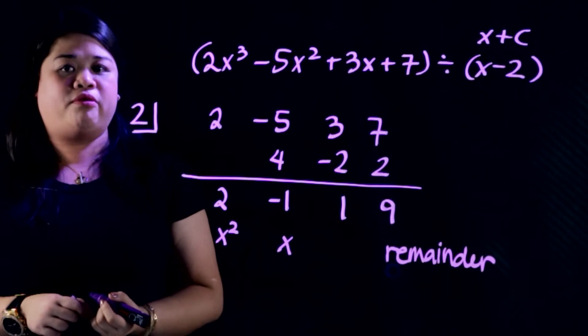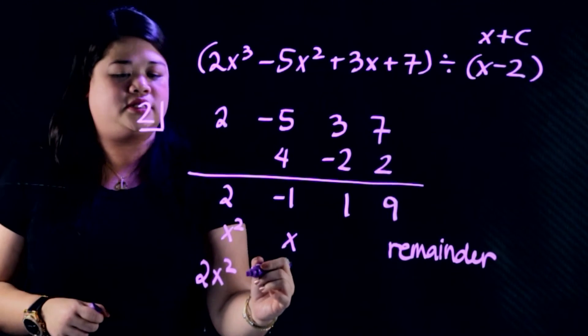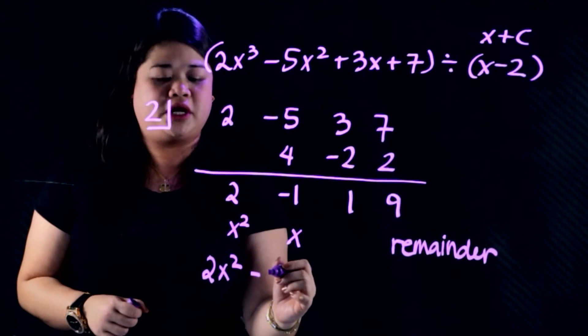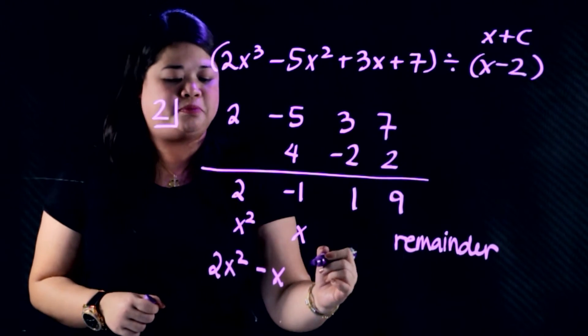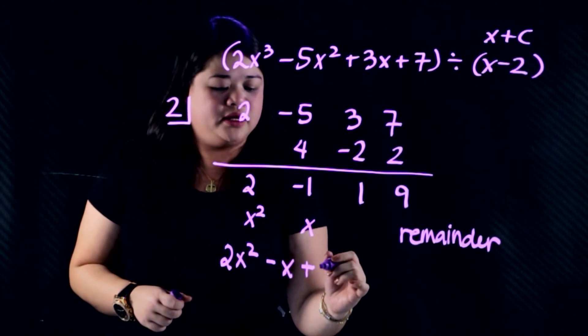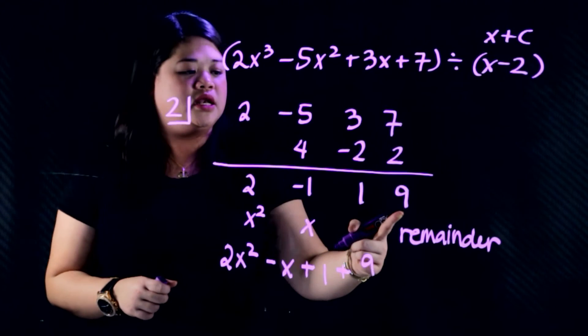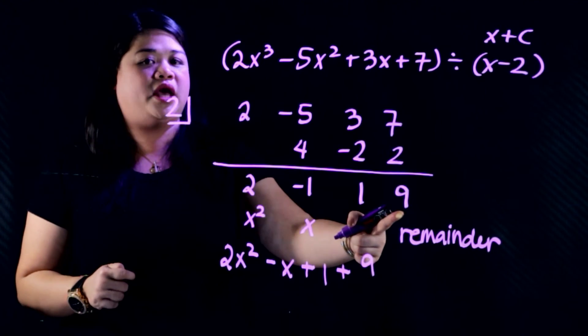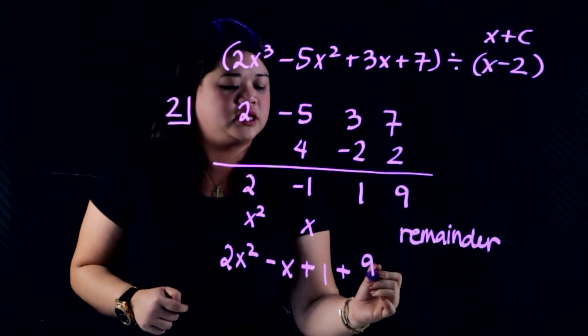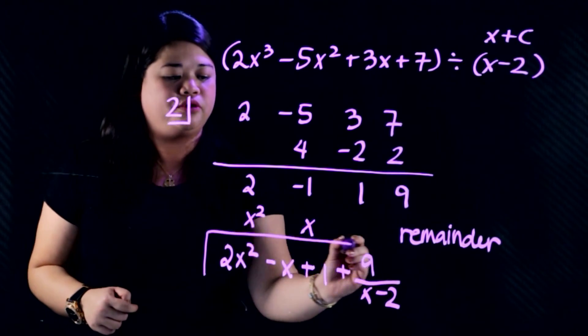Therefore, when we write our answer, it's going to be 2x squared. Then this is negative 1x or negative x. This is plus 1. And then you have a remainder of positive 9. But then you have to make sure to divide it by our divisor, which is x minus 2. So this whole thing will be our quotient.